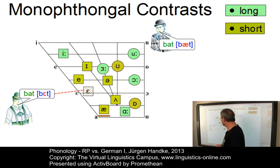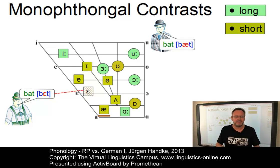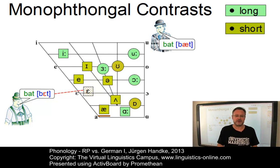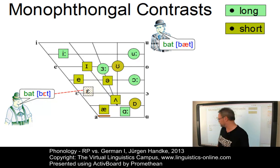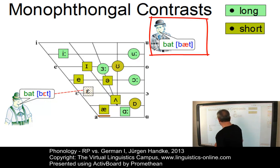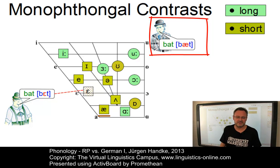The low front vowel is an enormous problem. This vowel — referred to as short A or ash — is a problem for German learners of RP because there is no German equivalent. It should be a low front vowel. Most German learners of present-day English use a mid-low E or even a mid-high E instead, making 'bed' and 'bad' homophones. So this is the target: 'bat'. And this is what many Germans say: 'bet'. Make it very low.